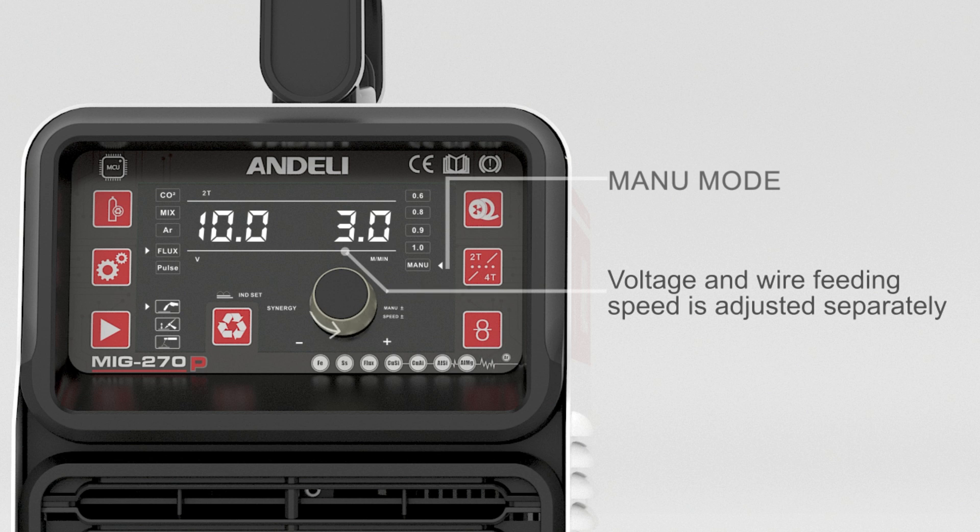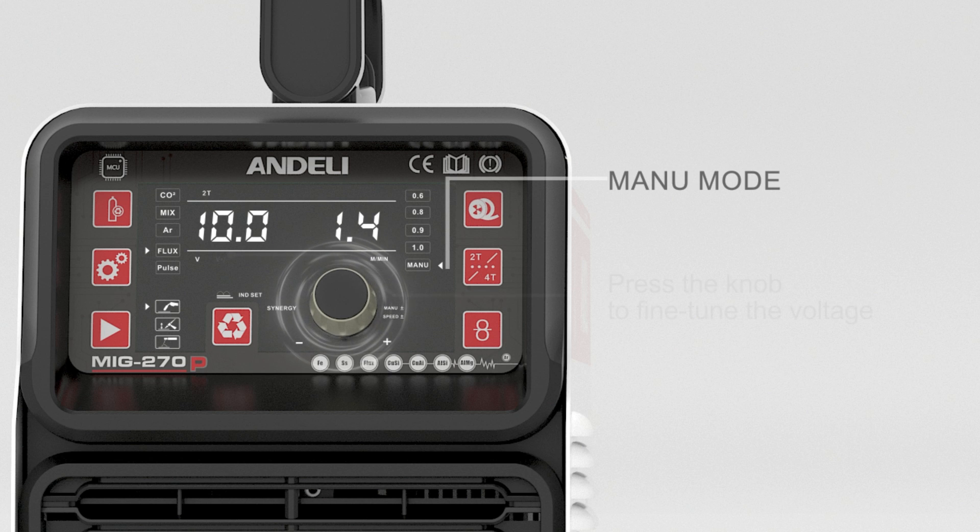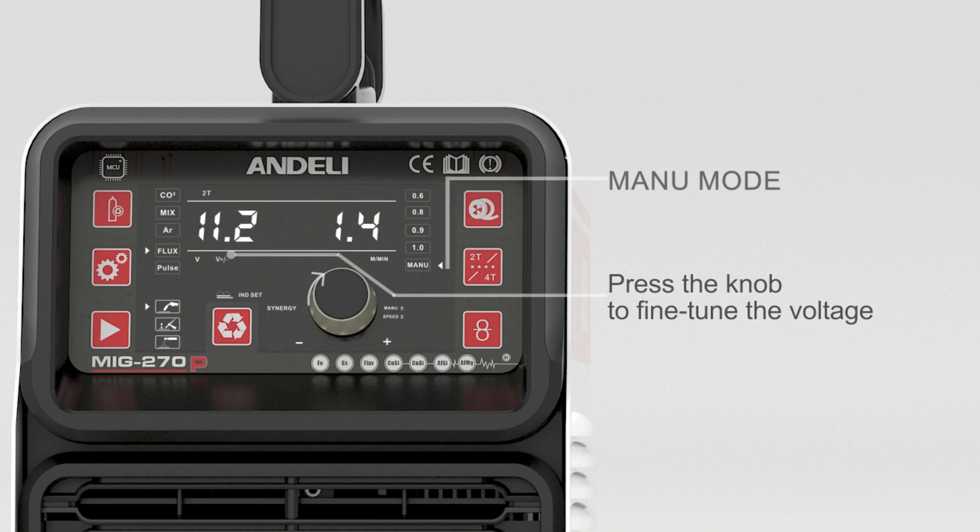In the manual mode, voltage and wire feeding speed are adjusted separately. Press the knob to fine-tune the voltage.